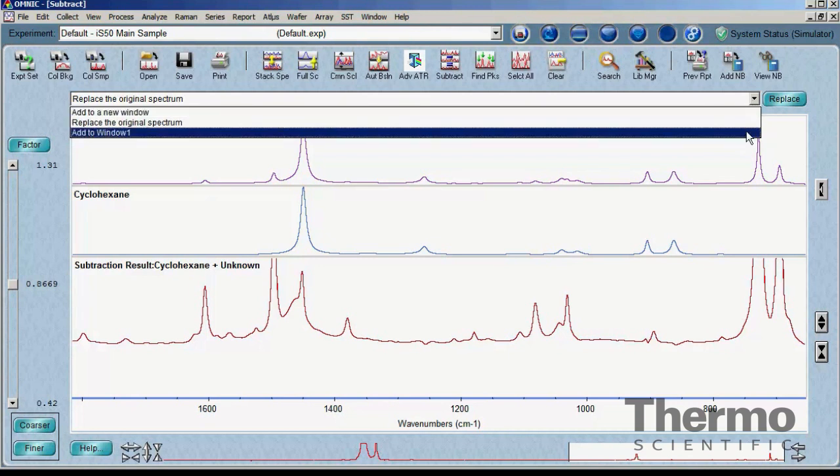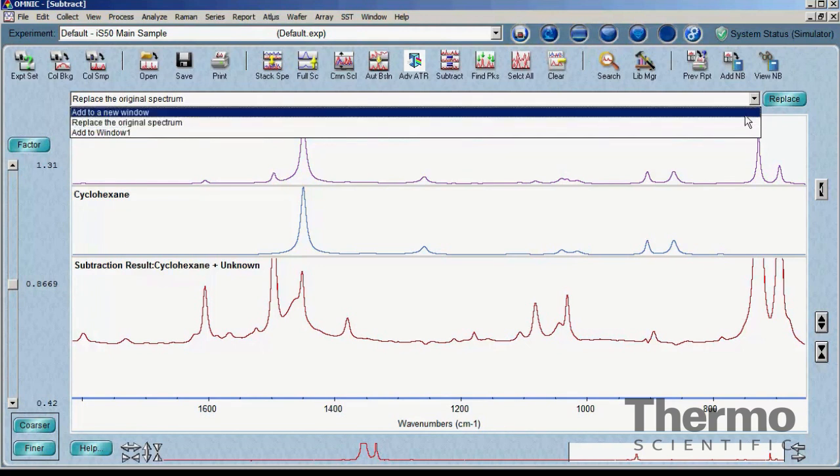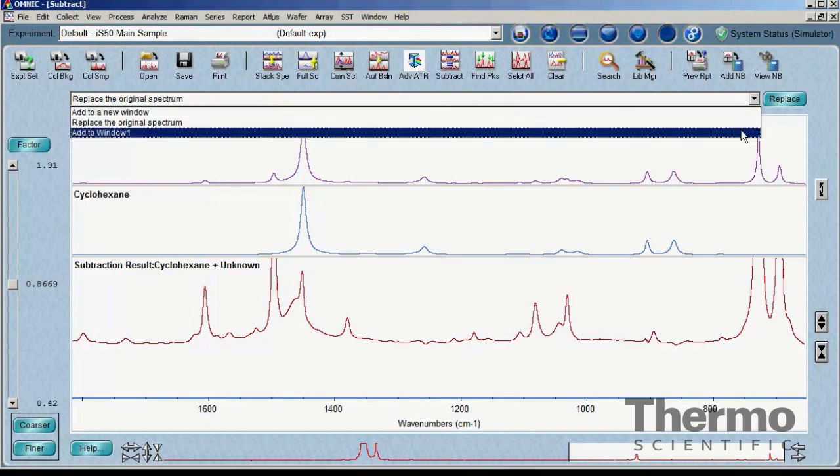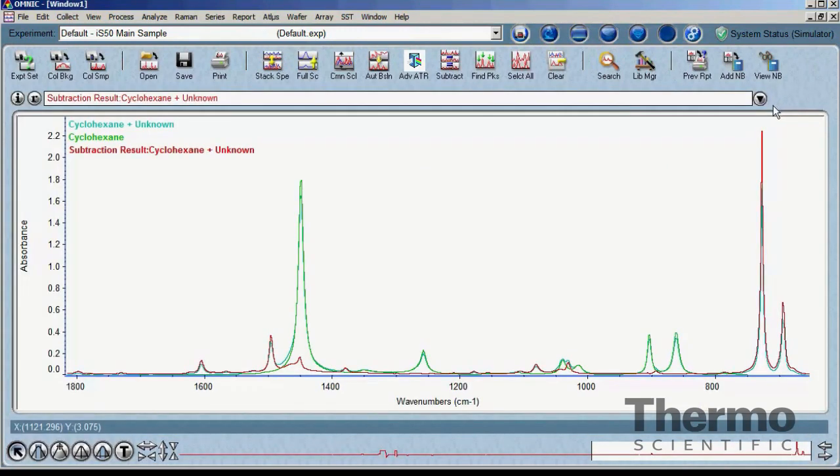The subtraction result can be placed back into the window that has the original spectrum, any other open Omnic window, or a new Omnic window by making the correct selection on the list. The subtraction result can now be further reviewed or searched to identify the second component in the mixture. If it appears that there is still more than one component in the result, additional subtractions can be attempted using different reference spectra.